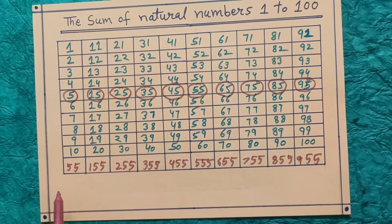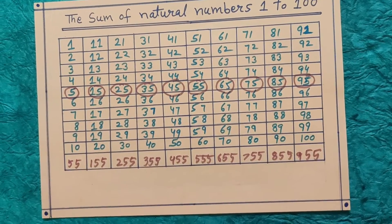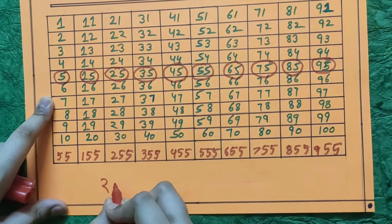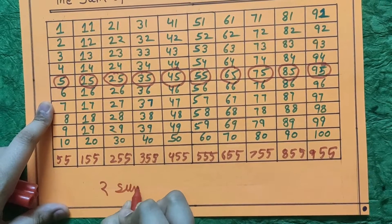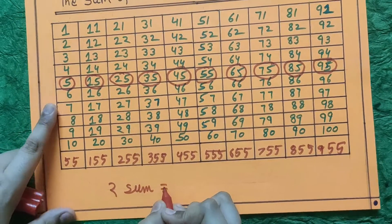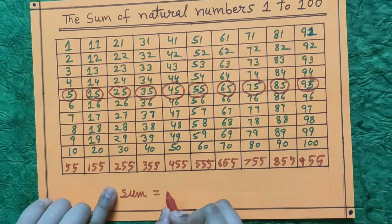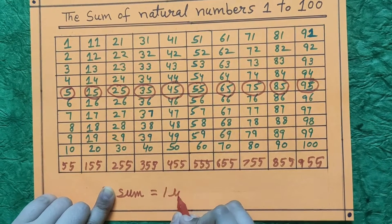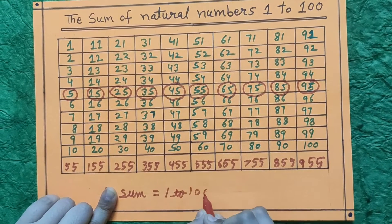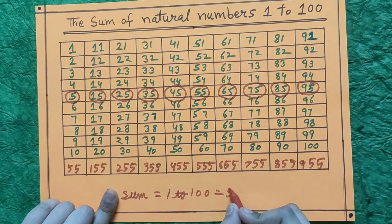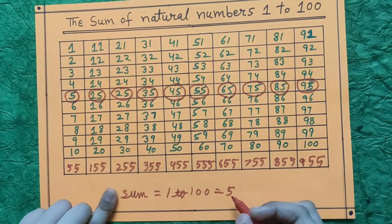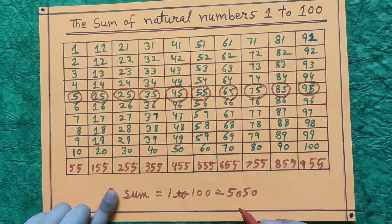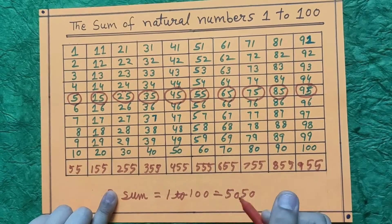And now we will add these all the numbers. Then the sum will be equal to... when we add these all the numbers we will get 5050.